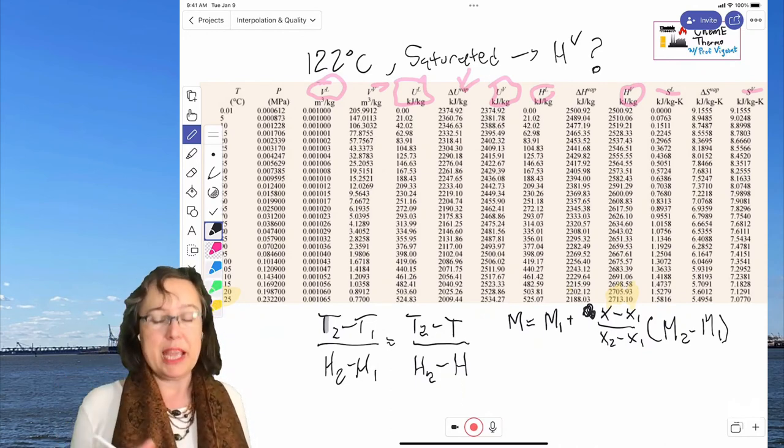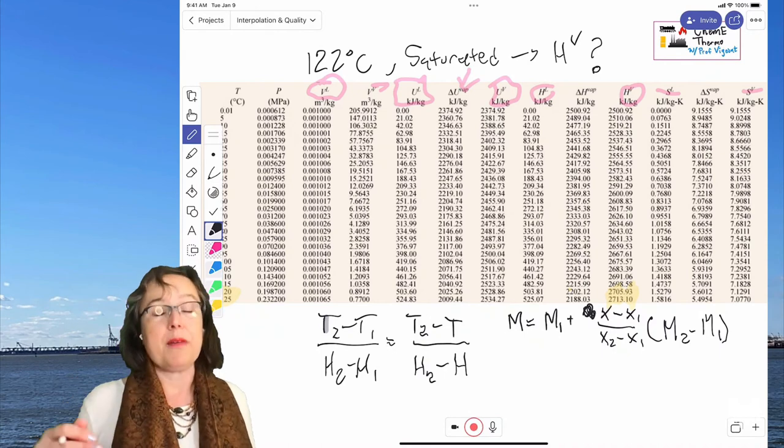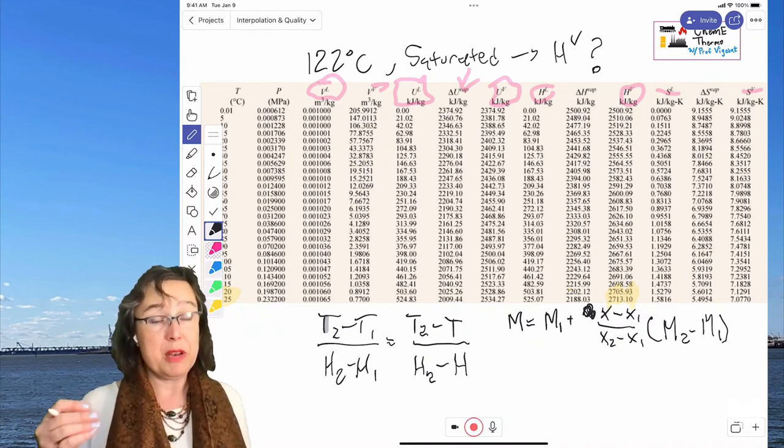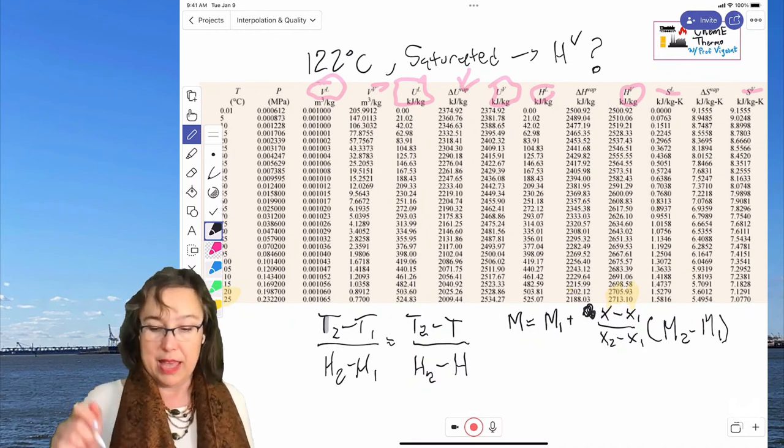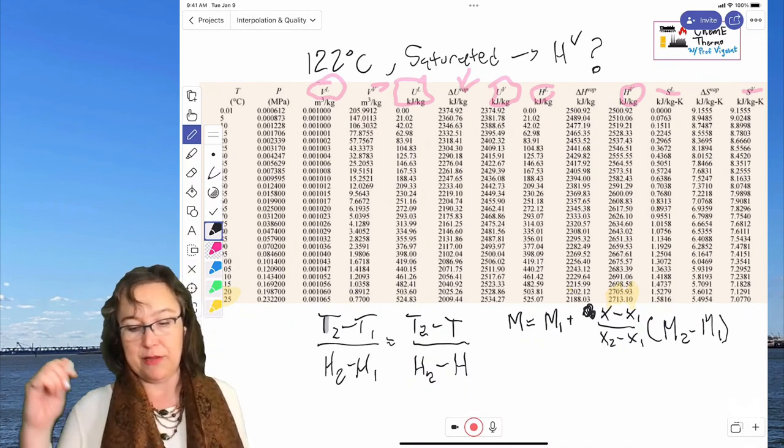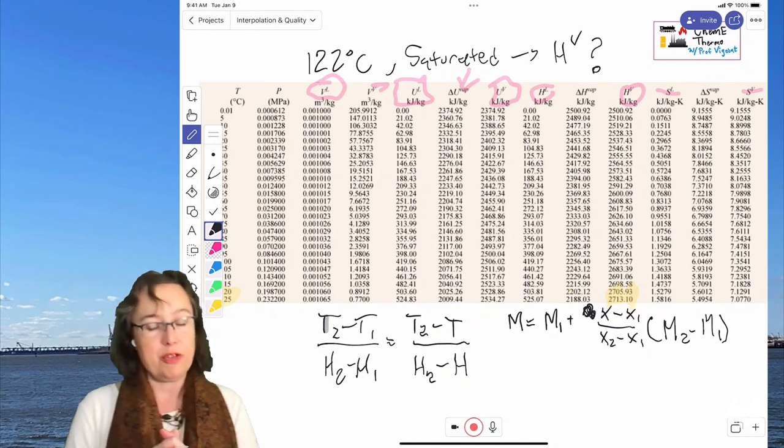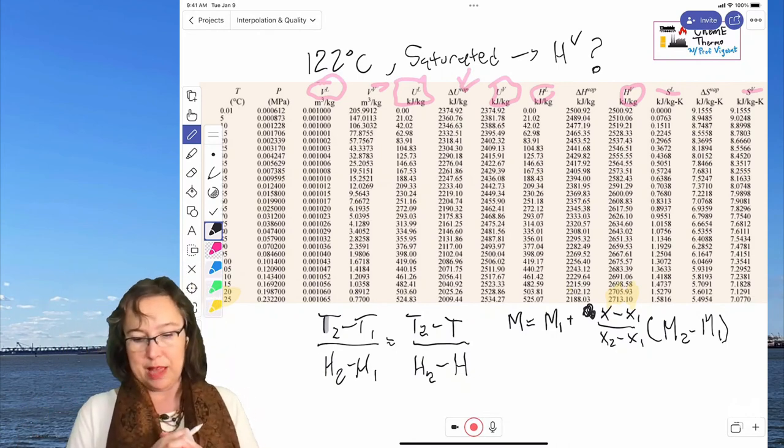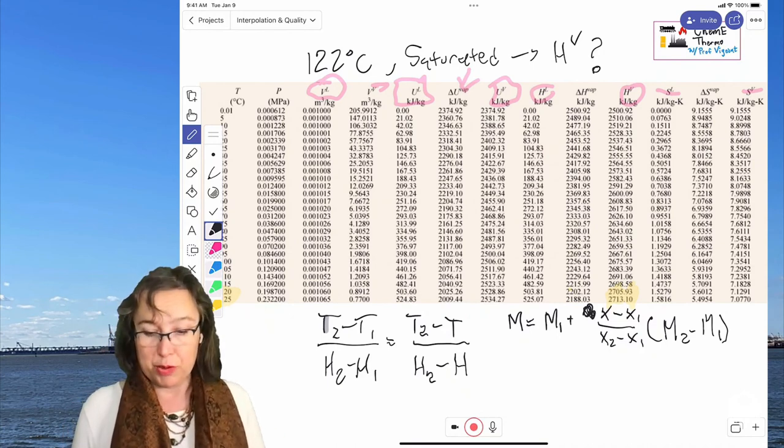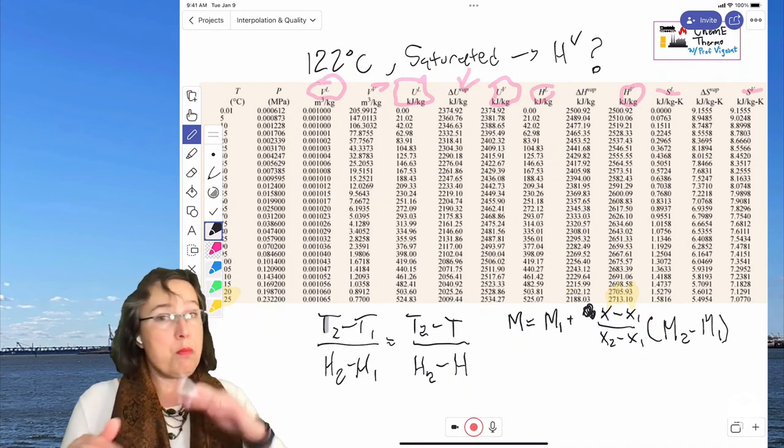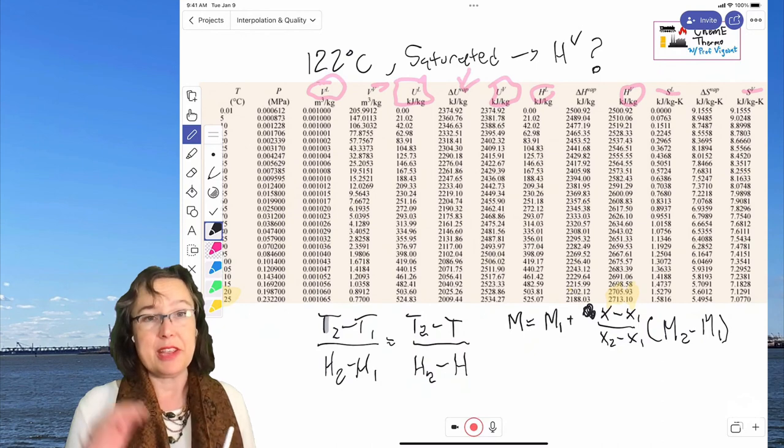So 120 and 125 for the X2 and X1. We put in 122 for X, and then M2 is 2,713.1 kilojoules per kilogram, and M1 is 2,005.93 kilojoules per kilogram, okay? So go through and give that a shot,